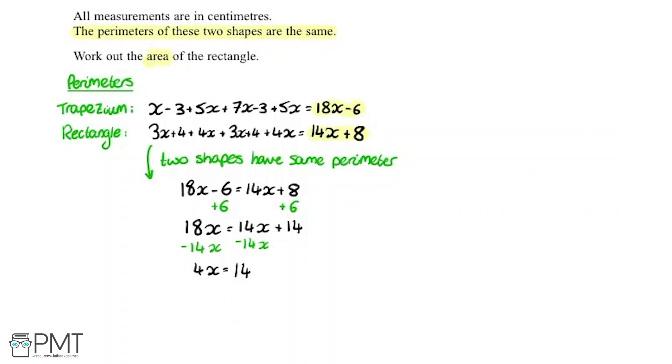Now finally to solve the equation we need to get x by itself. I'm going to write it as a fraction so we've got 14 divided by 4. If we put that into the calculator we'll get that that is equal to 3.5.